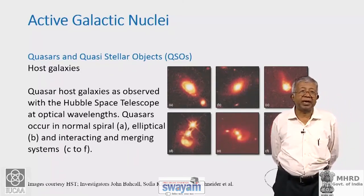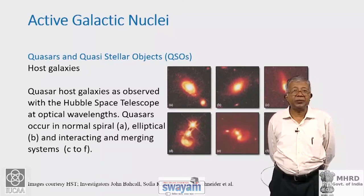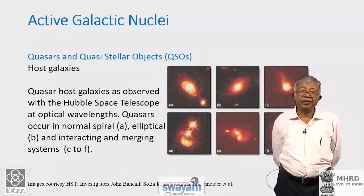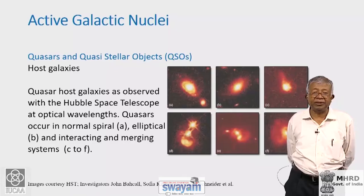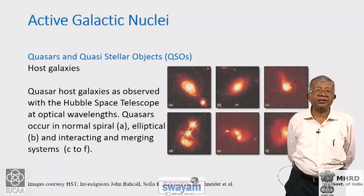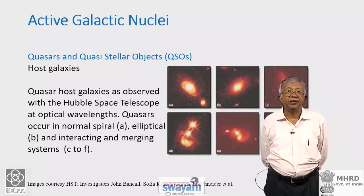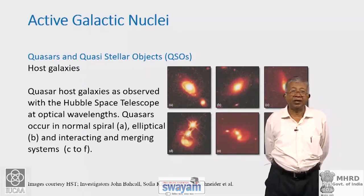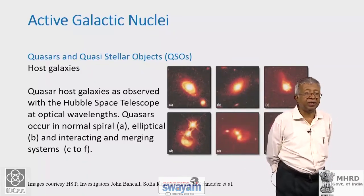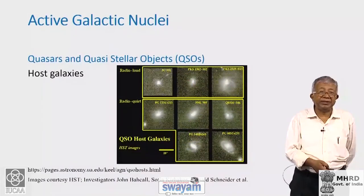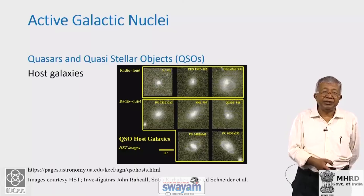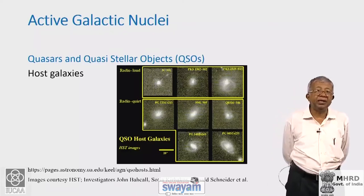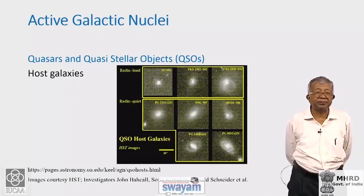Quasars came from the acronym of quasi-stellar radio source. When we learned to identify the colours and properties of quasars, we made optical surveys independent of radio emission, and found that only a small fraction are actually strong radio sources. Radio-weak, radio-quiet objects — like Seyferts — are called quasi-stellar objects (QSOs), while the radio-loud luminous ones are called quasars. A slide shows host galaxies of radio-loud and radio-quiet quasars: radio-loud ones tend to be in elliptical hosts, while radio-quiet ones can be elliptical, spiral, or interacting systems.